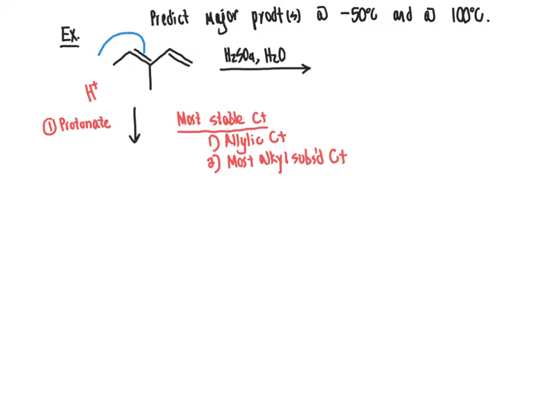So in order to make the most alkyl substituted carbocation possible out of this reaction, the way we can accomplish that is take the pi bond from here, bring it over to pick up the proton. And once the proton resides here at this position that I'm highlighting with my laser pointer, that will put the carbocation right here.